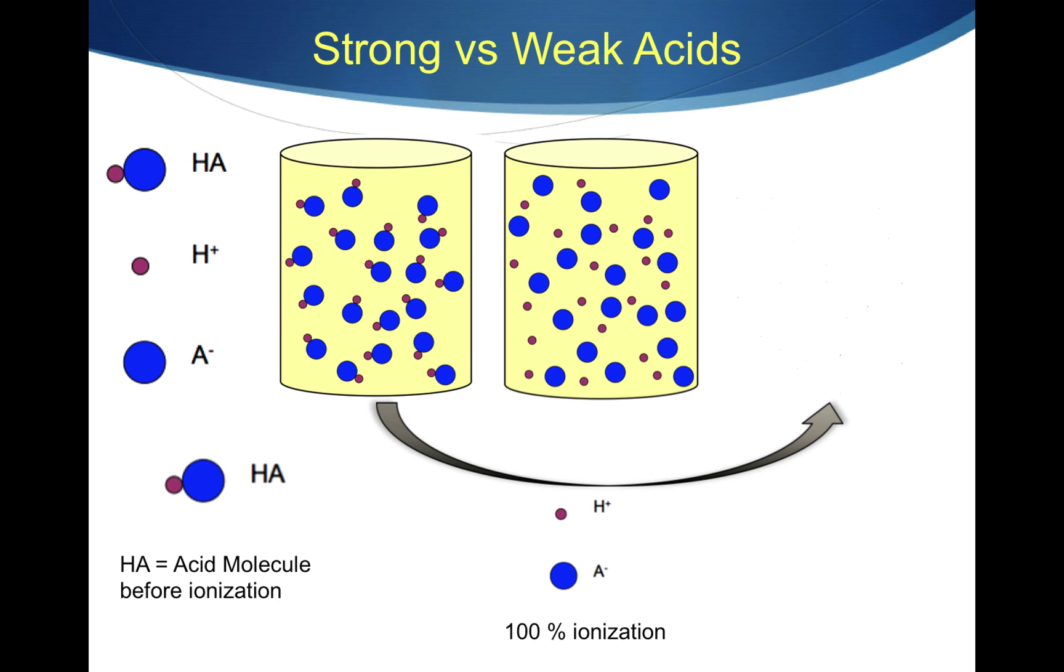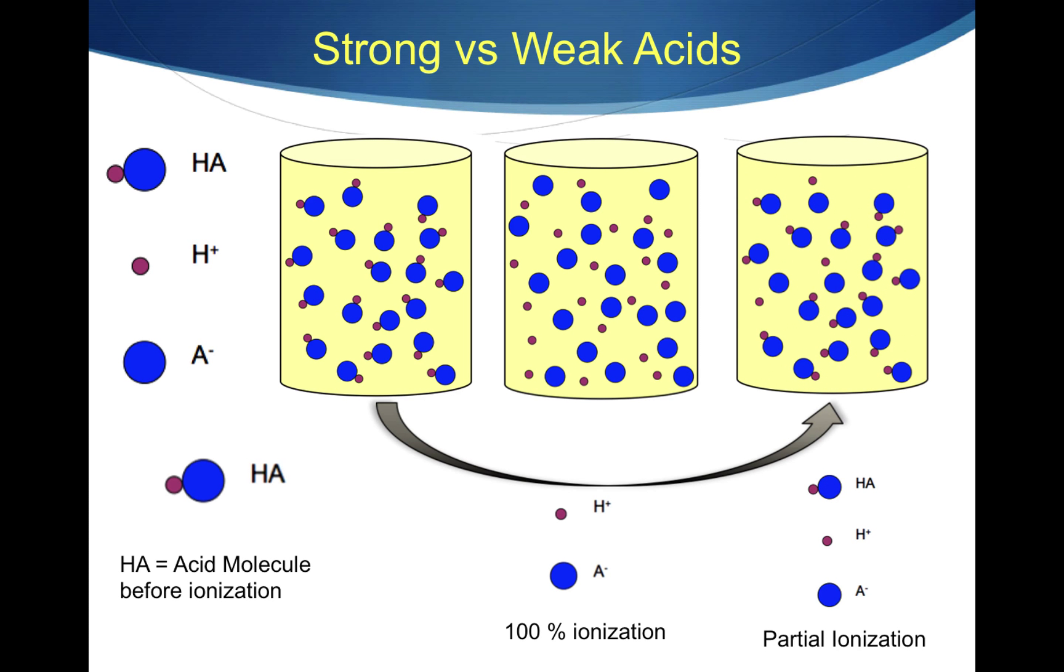Now let's consider another example. In this example, we see that we don't have complete ionization. In fact, we still have a lot of HA molecules that are unionized. We only have very few hydrogen ions and A-ions.